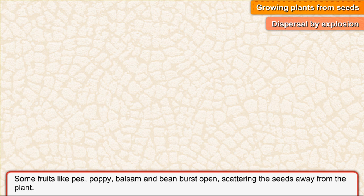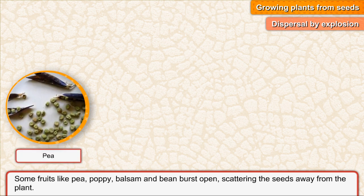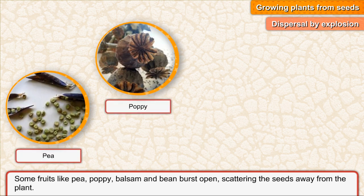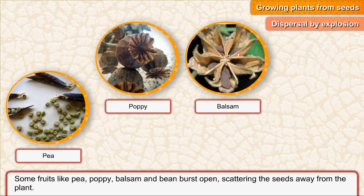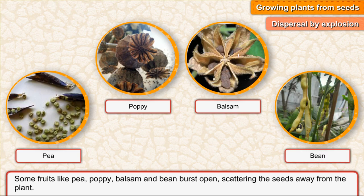Dispersal by explosion. Some fruits like pea, poppy, balsam and bean burst open, scattering the seeds away from the plant.